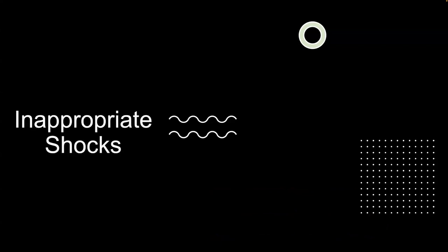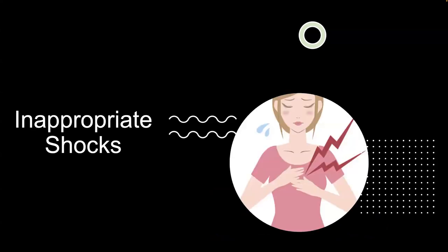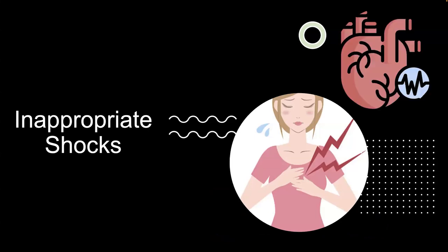However, the ICD device will not always make decisions correctly. This is because the decision algorithm usually requires very high sensitivity. The high sensitivity helps the ICD not miss any cases requiring a shock. However, there will be a lot of inappropriate shocks from the ICD device, and these inappropriate shocks lead to various health issues, including pain, increased risk of arrhythmias, and anxiety.